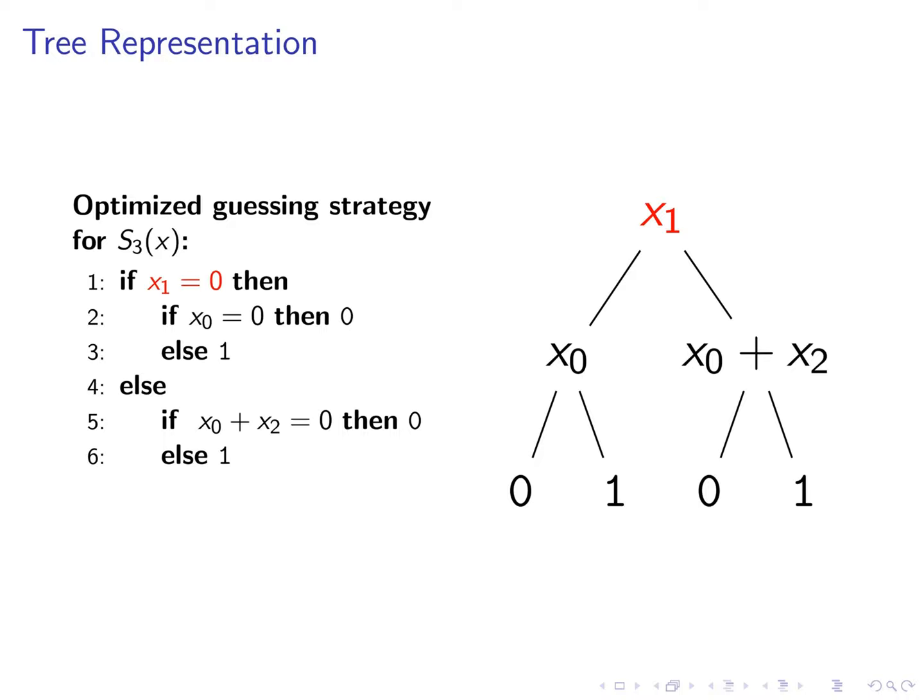Given an input x you first look at the root node. The linear combination indicated by the root label will be compared to 0. If it is 0 then you go into the left branch. Then you look at the linear combination indicated by that node. If it is 0 then the output of the function is constant 0. Otherwise the output is 1. We proceed in the same way when x1 is equal to 1. Then we go into the right branch and compare x0 plus x2 to 0. If it is 0 then the output is 0. Otherwise the output is 1.